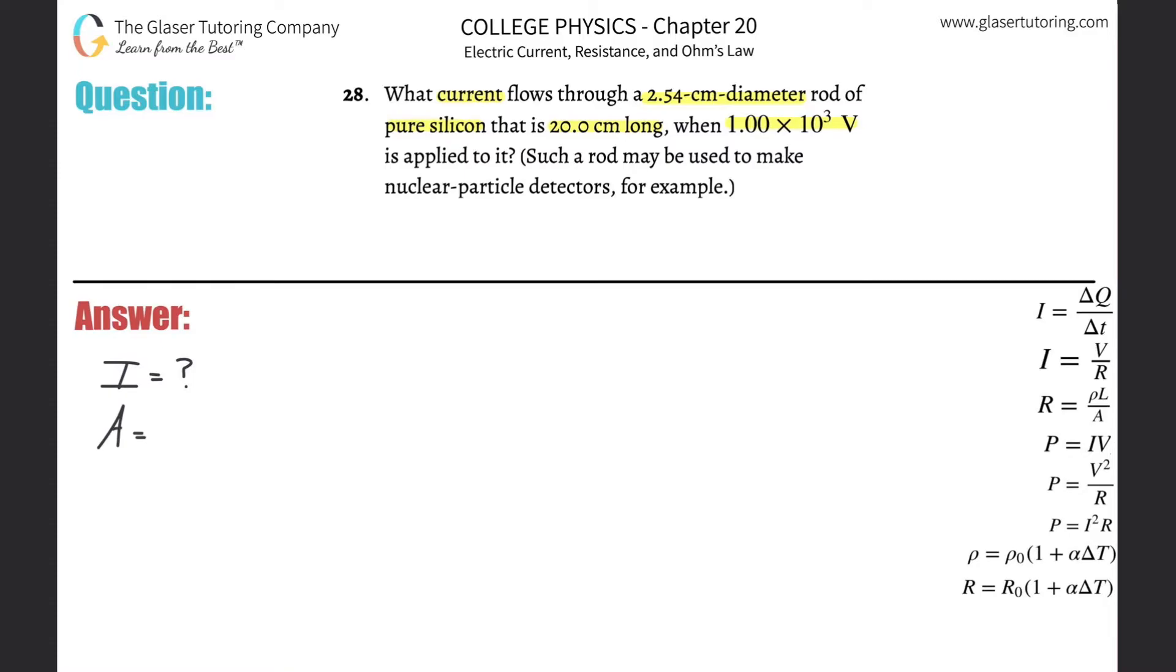So the cross-sectional area now of the wire will be, remember it's circular. So check out those other problems. I've gone through this example many times. This one we've got to move a little faster through. So it's equal to pi r squared. Now, what's the radius? Well, if they told you the diameter, you simply got to take that and divide it by 2.